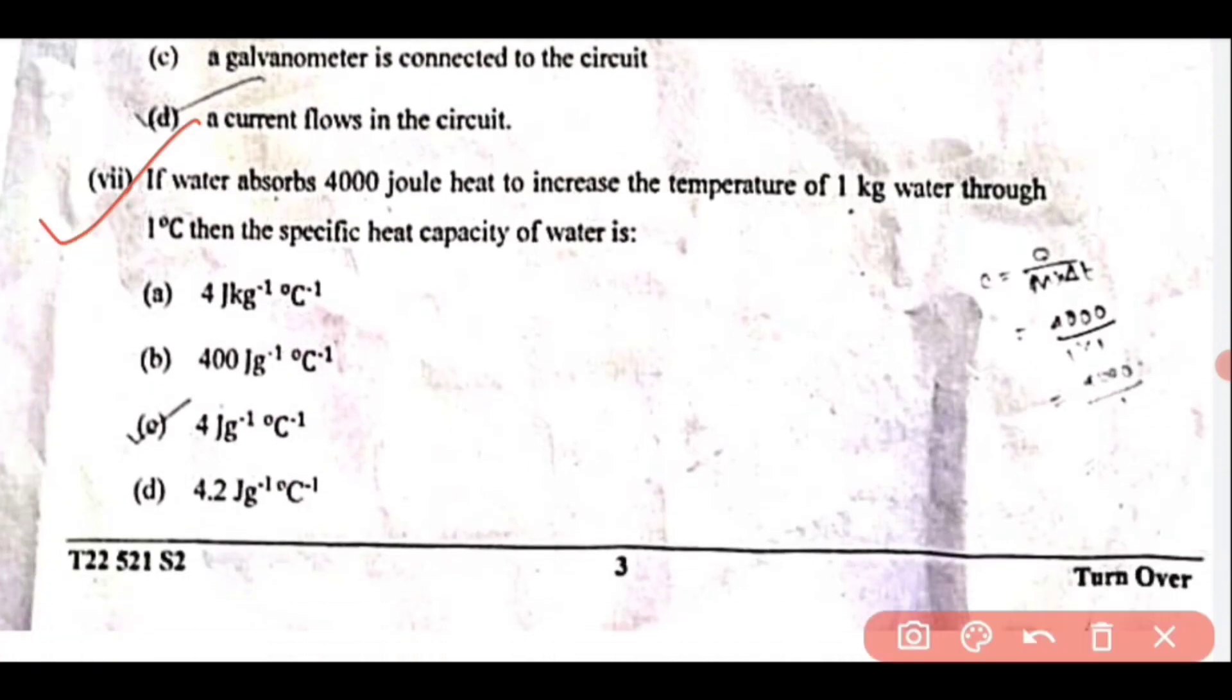Question 7: This is a numerical problem. The correct answer is option C: 4 joules per gram per degree Celsius.